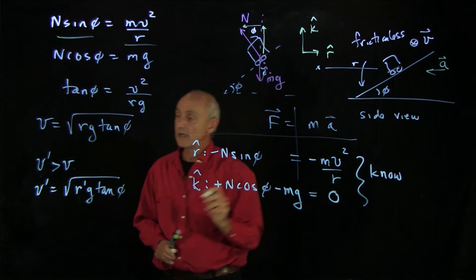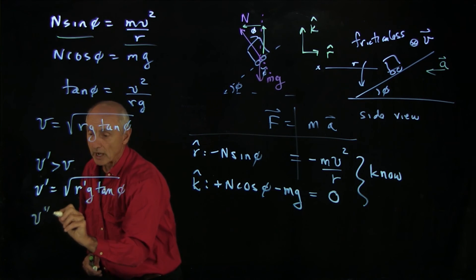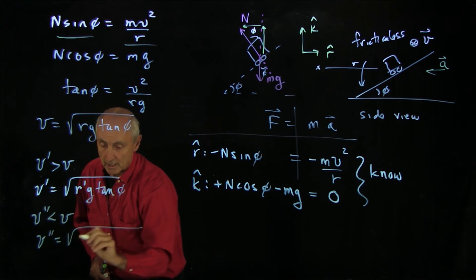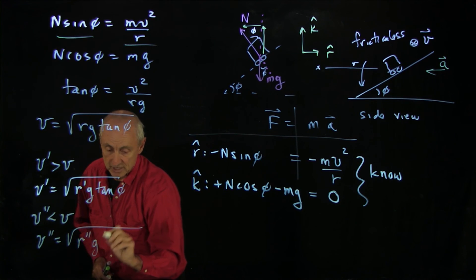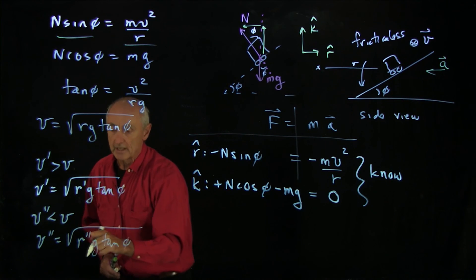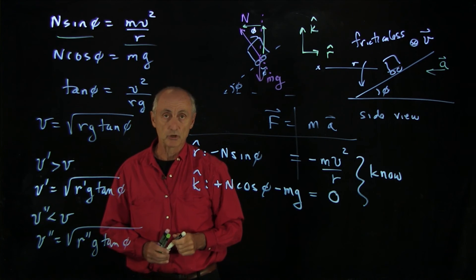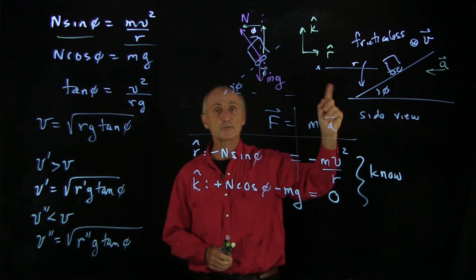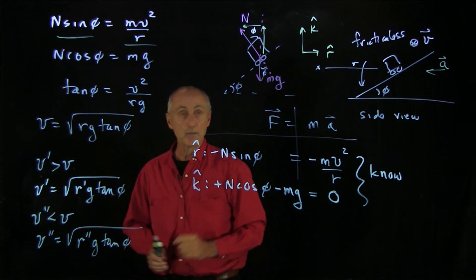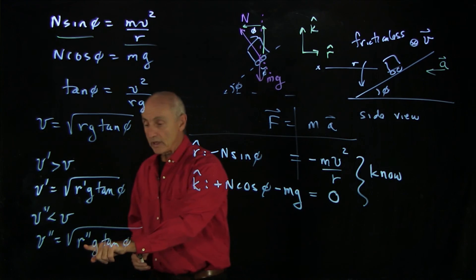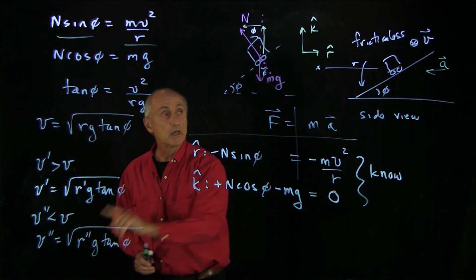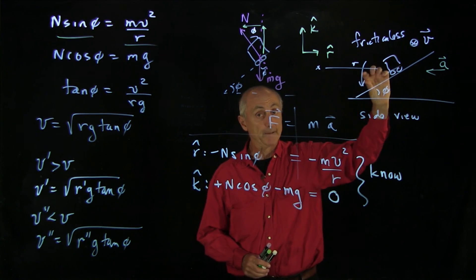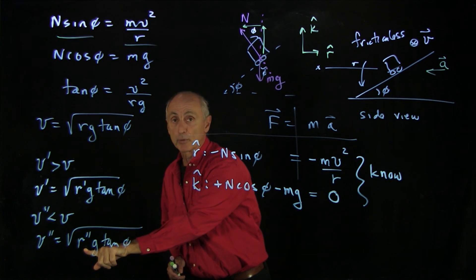The same thing, too, if we have v double prime less than v, then v double prime is equal to r double prime g tan phi. Now remember, this double prime is not two derivatives. I'm just using that as a notation to indicate different speeds. So if the car is going along at speed v and slows down, the new equilibrium radius is smaller. So the car slides down the inclined plane until it gets to r double prime.